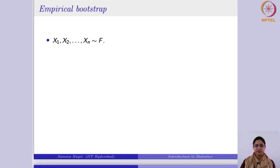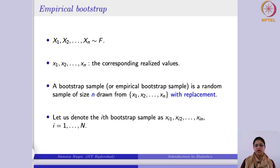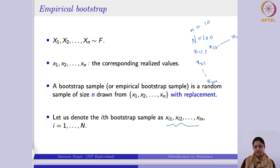Suppose you have a random sample of realized values from some population — we use small x for that. A bootstrap sample, or empirical bootstrap sample, is a random sample of size n drawn from this with replacement. You can denote the ith bootstrap sample accordingly. For example, if you decide to take 100 bootstrap samples, the first sample has x11, x12, up to x1n, the second likewise, and so on up to the 100th sample. For each, you obtain a bootstrap sample.